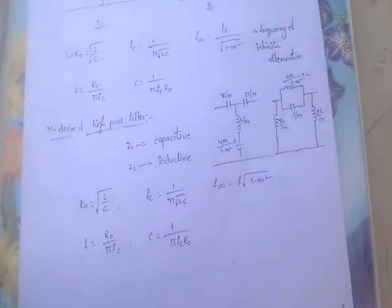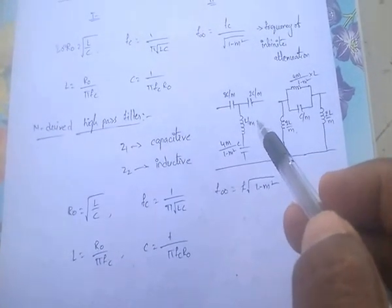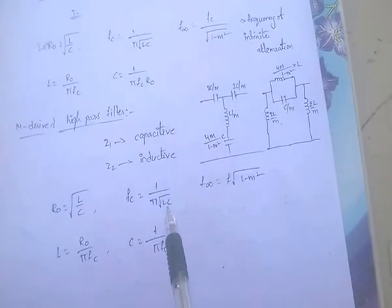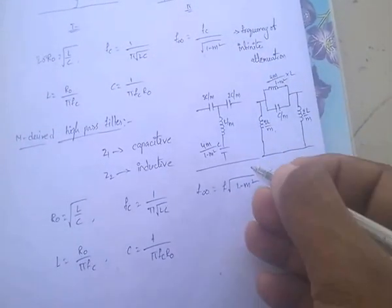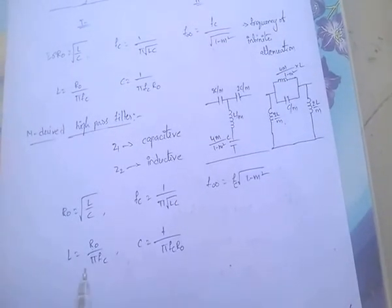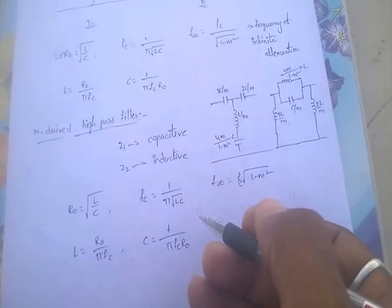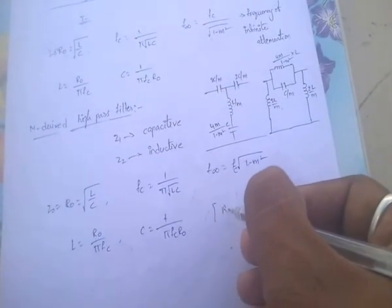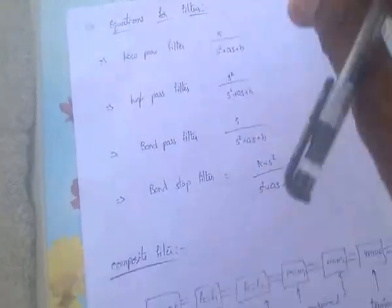Coming to M-derived high pass filter: the series element is capacitive (2C/M) and the shunt element is inductive (L/M). The formulas are: R₀ = √(L/C), FC = 1/(π√LC), F∞ = FC × √(1 - M²), L = R₀/(πFC), and C = 1/(πFC × R₀). Here R₀ is nothing but the characteristic impedance Z₀.